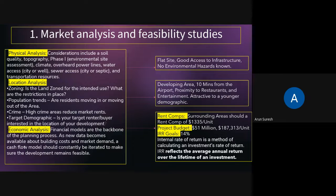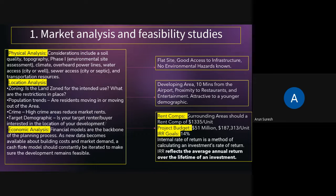In terms of market analysis and feasibility studies, there are three things to look for. One is physical analysis — you check whether the site has good soil, what the topography is (uneven surfaces requiring excavation can be expensive), and whether there are overhead power lines along your property that may need to be relocated. These are things you look for in physical analysis.